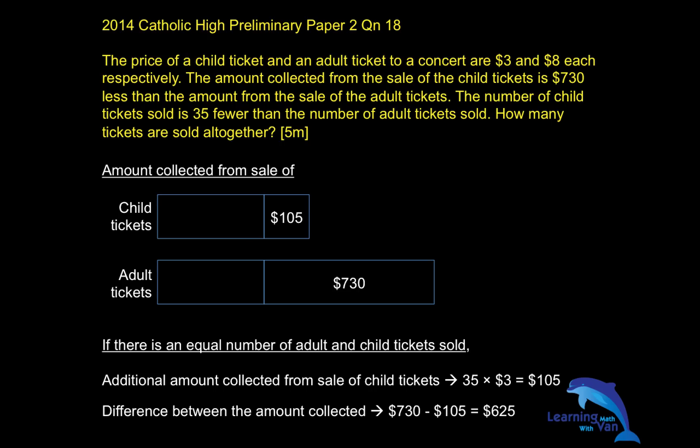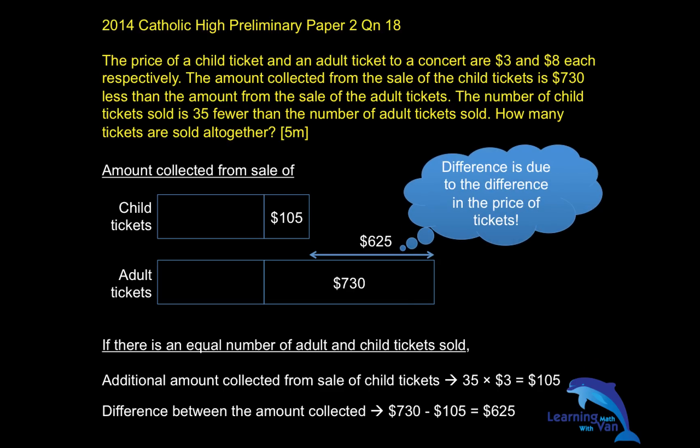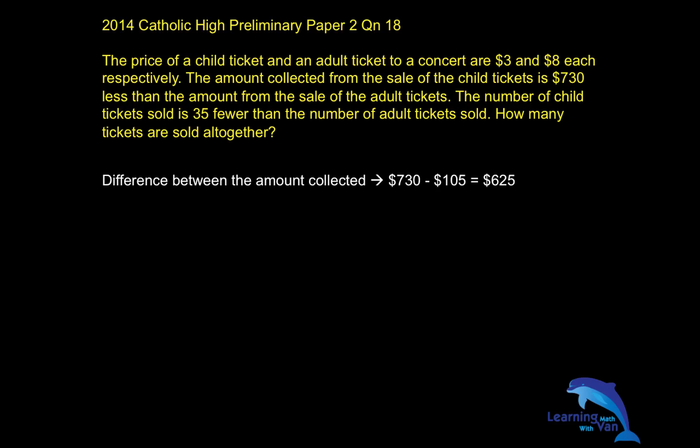Now, $730 minus $105 equals $625. This difference must — 100% sure — be due to the difference in price of the tickets. I am very sure it is due to the price of the tickets. So, what is the difference between one adult and one child ticket? It's $5.